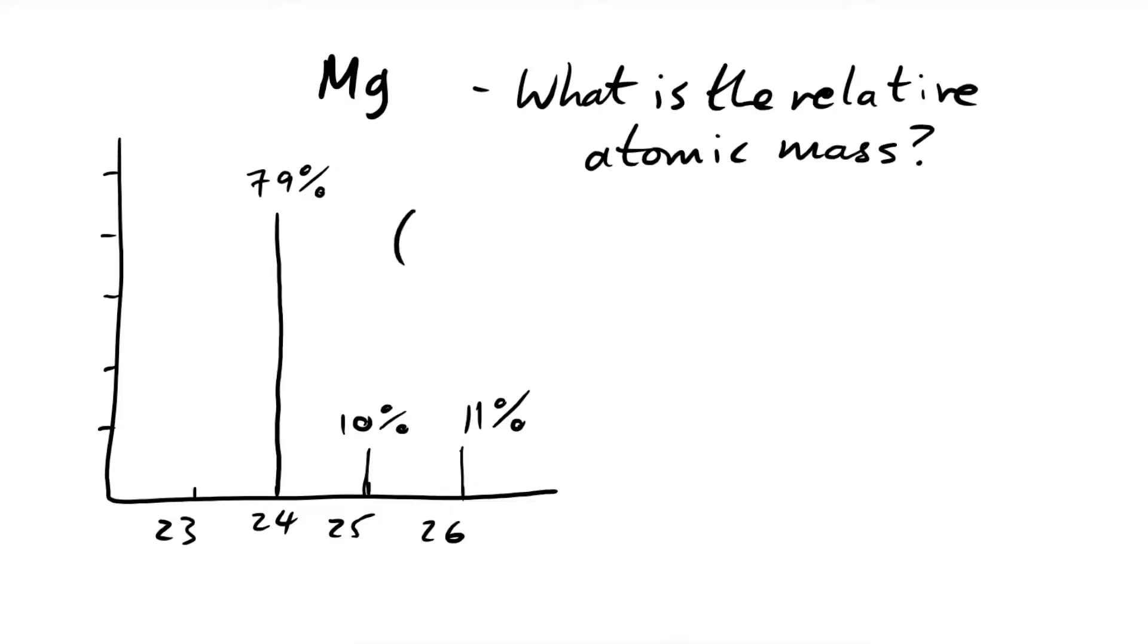So just like earlier, when we thought about chlorine, all we do is take the decimal form of our relative abundance, times that by the mass, and then add them all up for all of the different isotopes that we have detected. And we end up with 24.3. So the relative atomic mass of naturally occurring magnesium is 24.3, because we have atoms with different numbers of neutrons, either 12, 13 or 14.